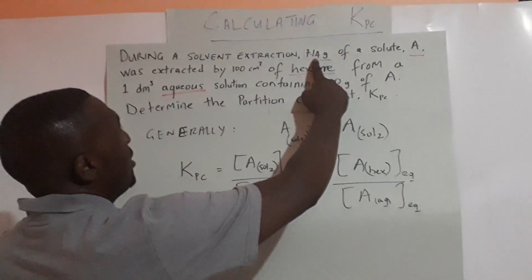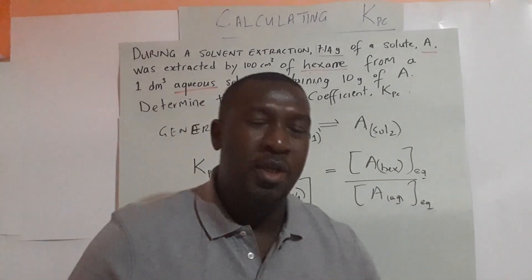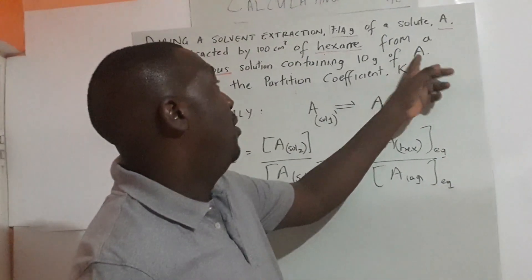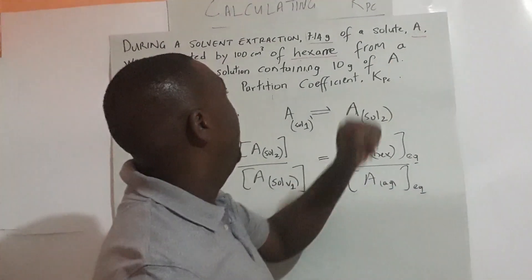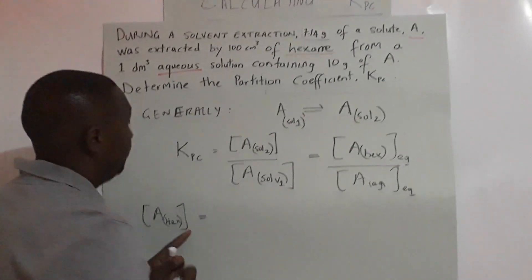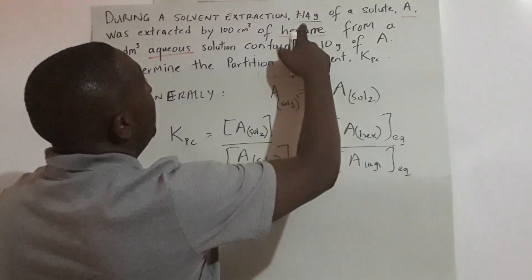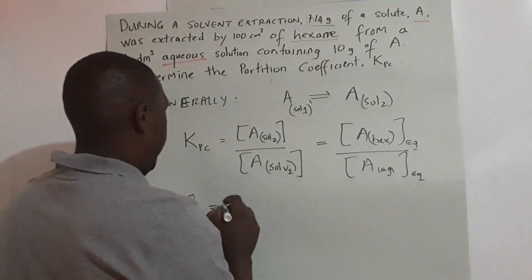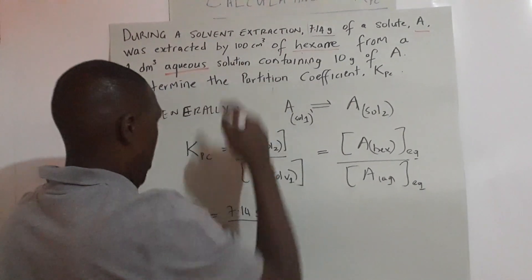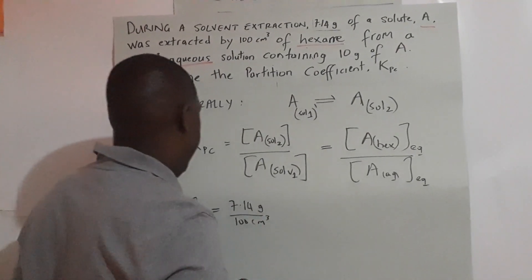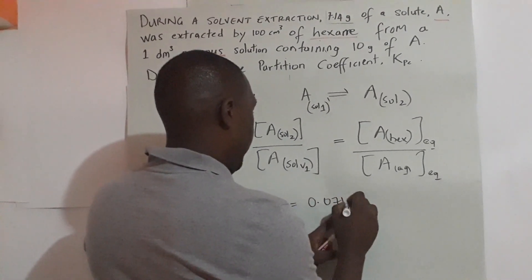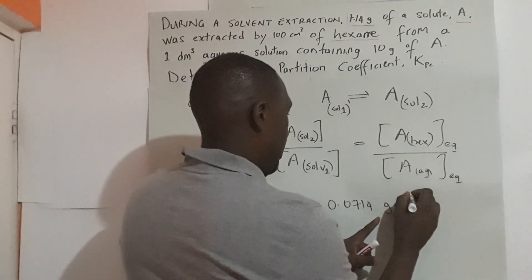For A in hexane, we're given mass and volume, so we're going to use mass concentration. We could have worked out molar concentration if we knew the formula of A, but we don't know the molar mass. How much mass of A is in hexane? We have 7.14 grams of A in 100 cm³ of solvent, which equals 0.0714 grams per centimeter cube.